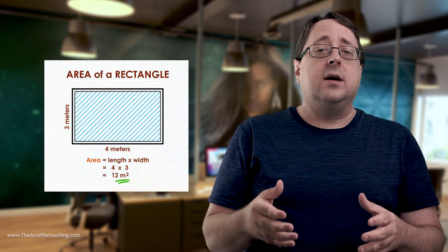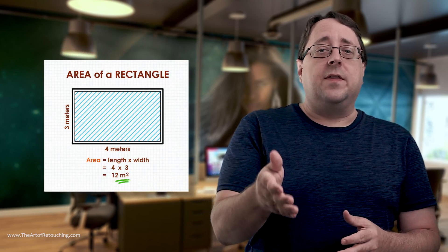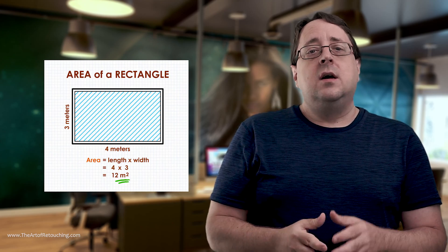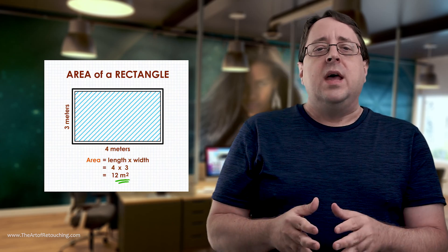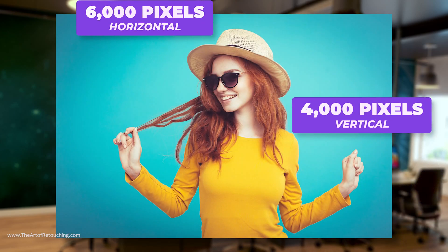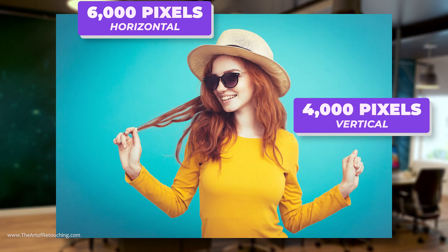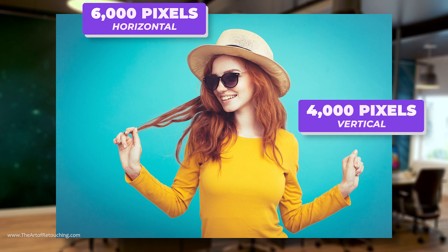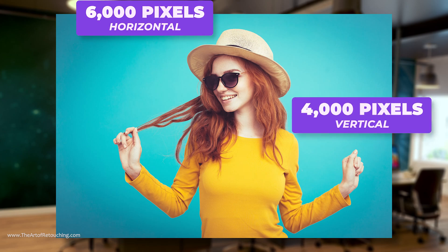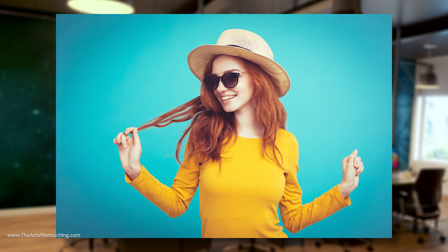In order to calculate this resolution, you just use the same formula you would for the area of a rectangle — multiply the length by the height. For example, if you have a photo that is 6000 pixels on the horizontal side and 4000 pixels on the vertical side, this gives you a total of 24 million pixels, which would be 24 megapixels.